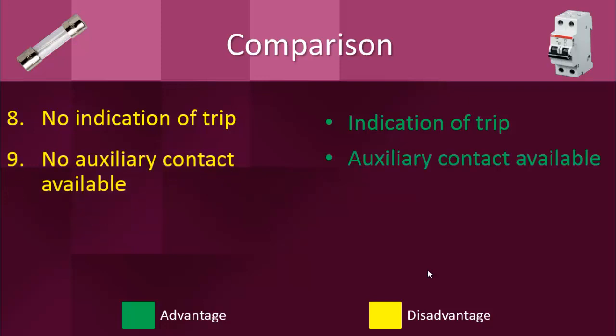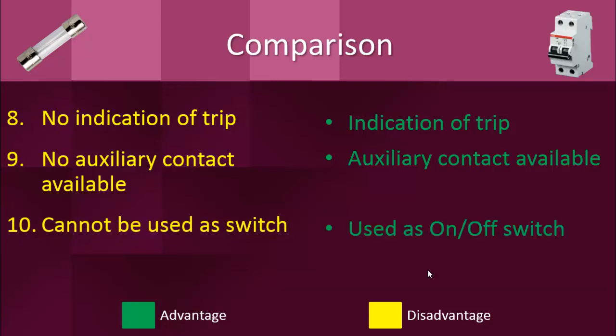No auxiliary contacts are available with fuse holders, whereas modern circuit breakers now have auxiliary contacts available that can be used in the control circuit. Another demerit of the fuse is that it cannot be used as a switch other than as a protective device — you cannot open or close the circuit using a fuse. Whereas with a circuit breaker, you can easily switch the circuit on or off at any time.